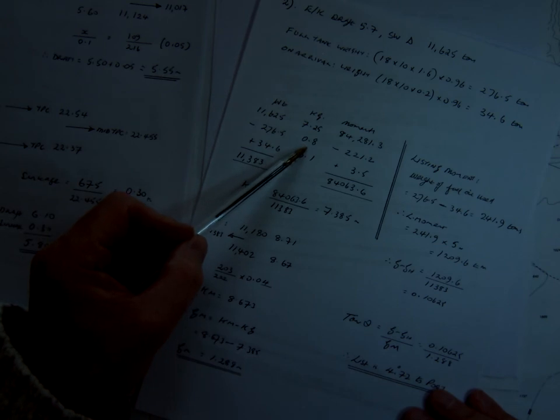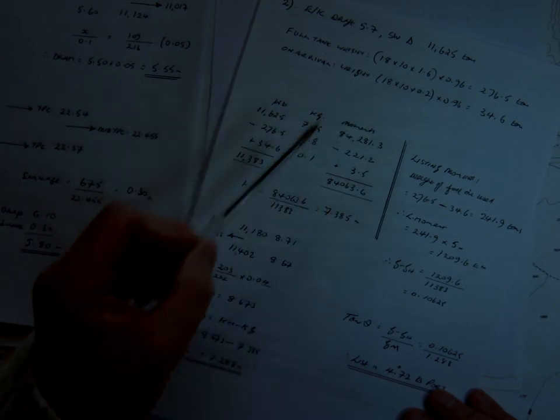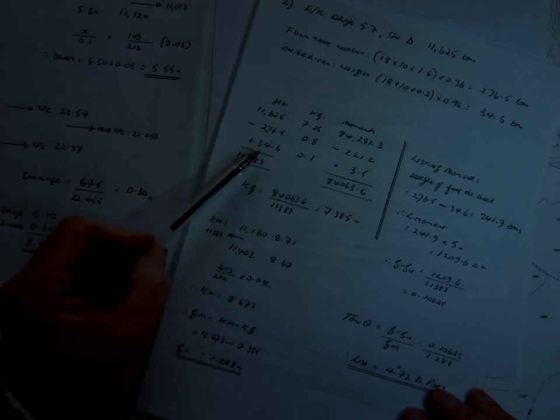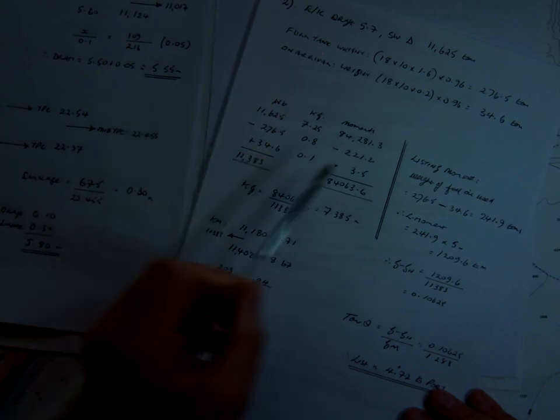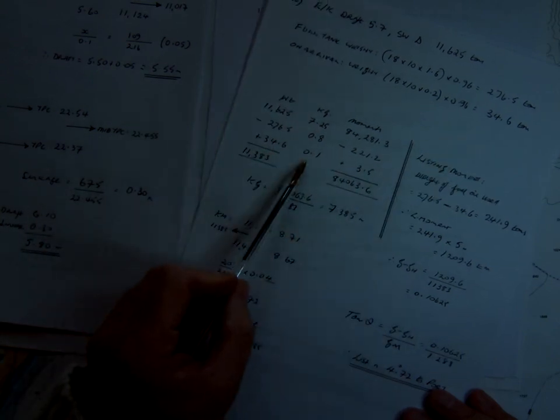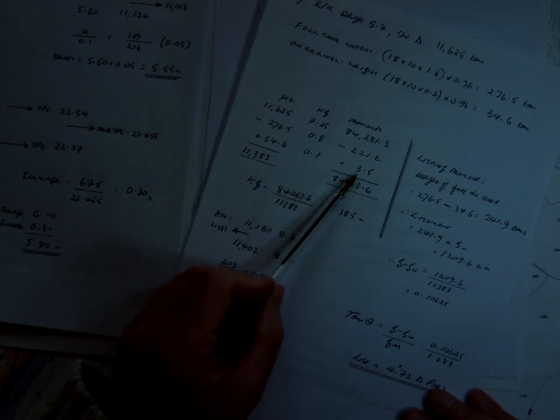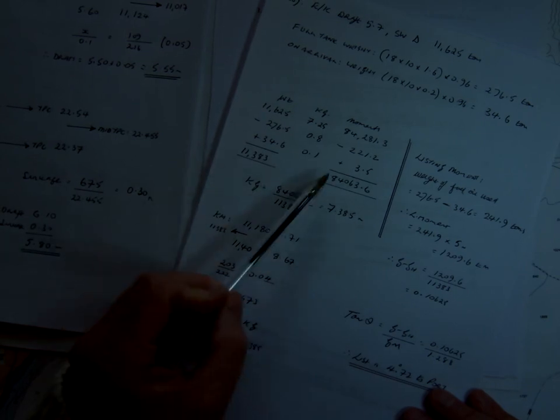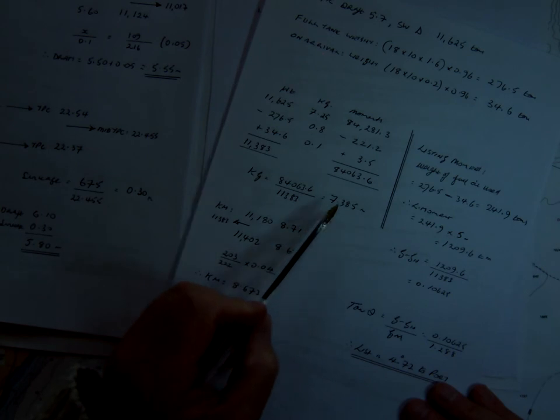because the depth of the full tank is 1.6, so therefore our KG is going to be half that, 0.8. So we would subtract that whole weight, but we haven't used it all, because we've still got 0.2 left. So then we have this 34.6 tons, of course the KG is 0.1, which is half the 0.2, so that means that we've still got those moments to apply and to add. So we've got the total moments, total weight, and it gives us a KG of 7.385.